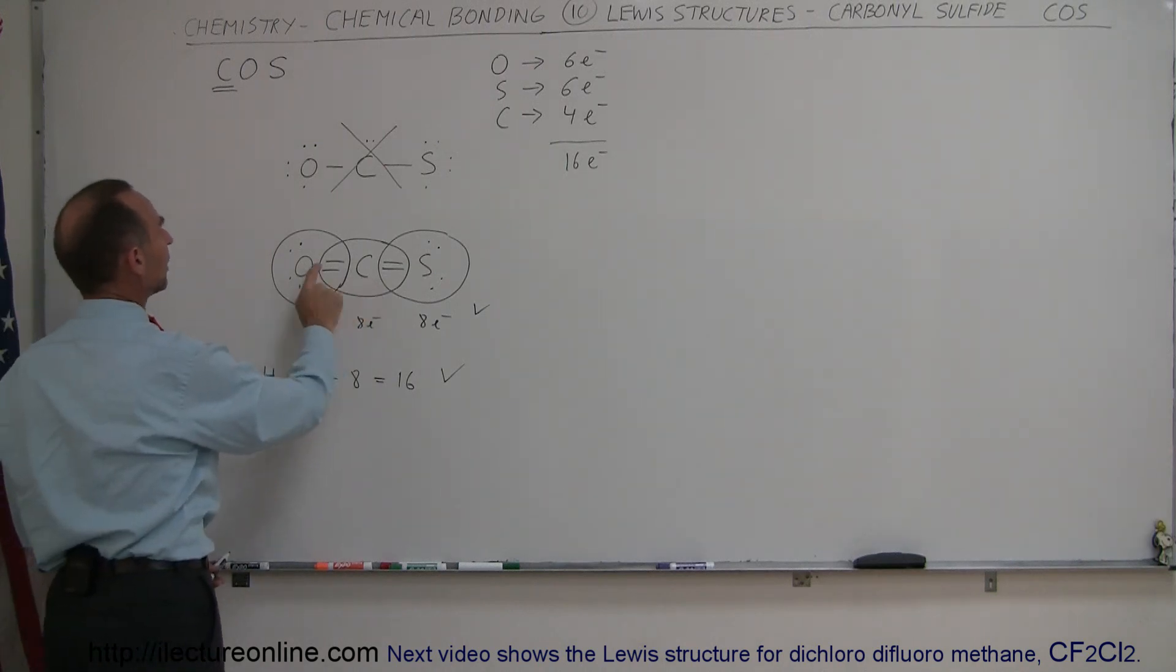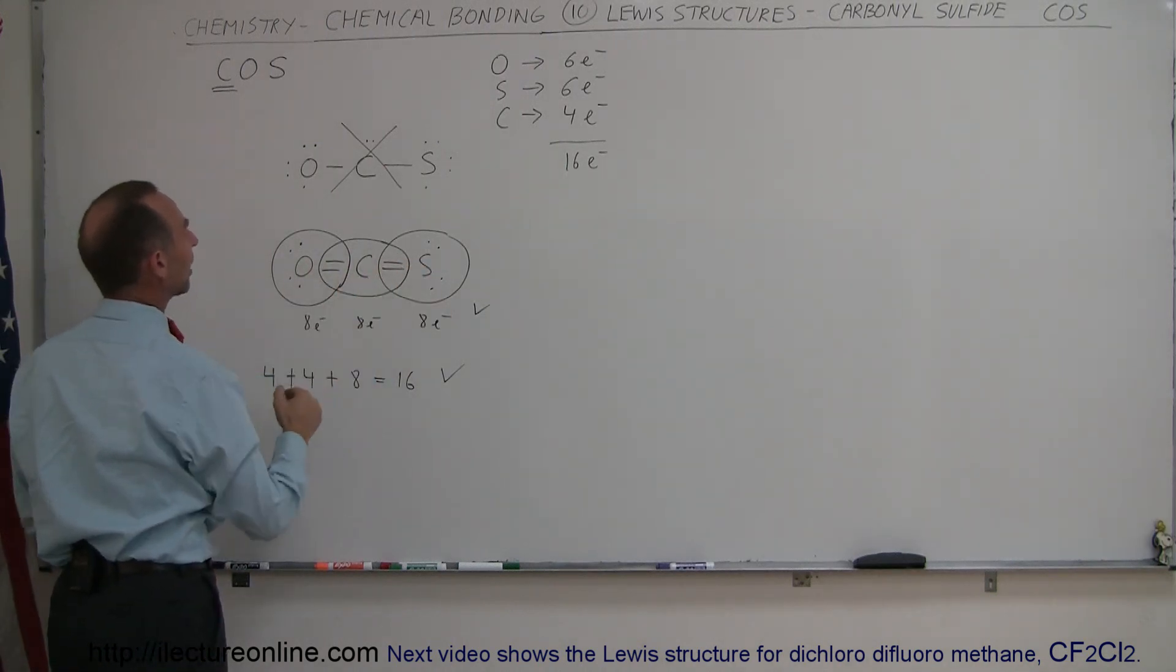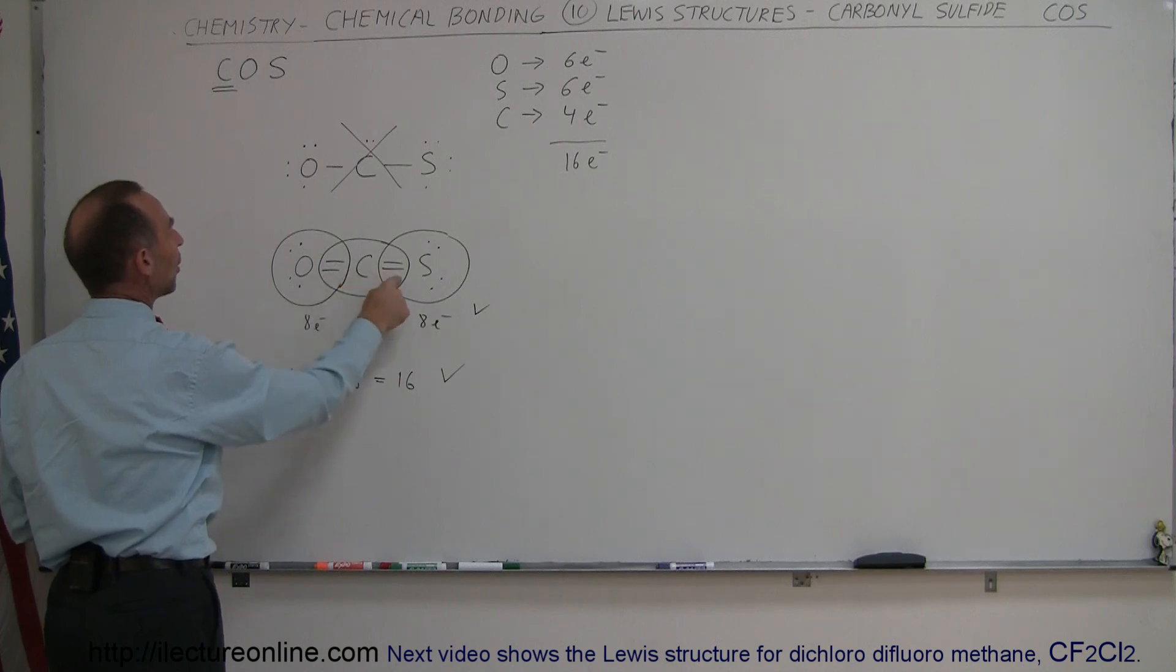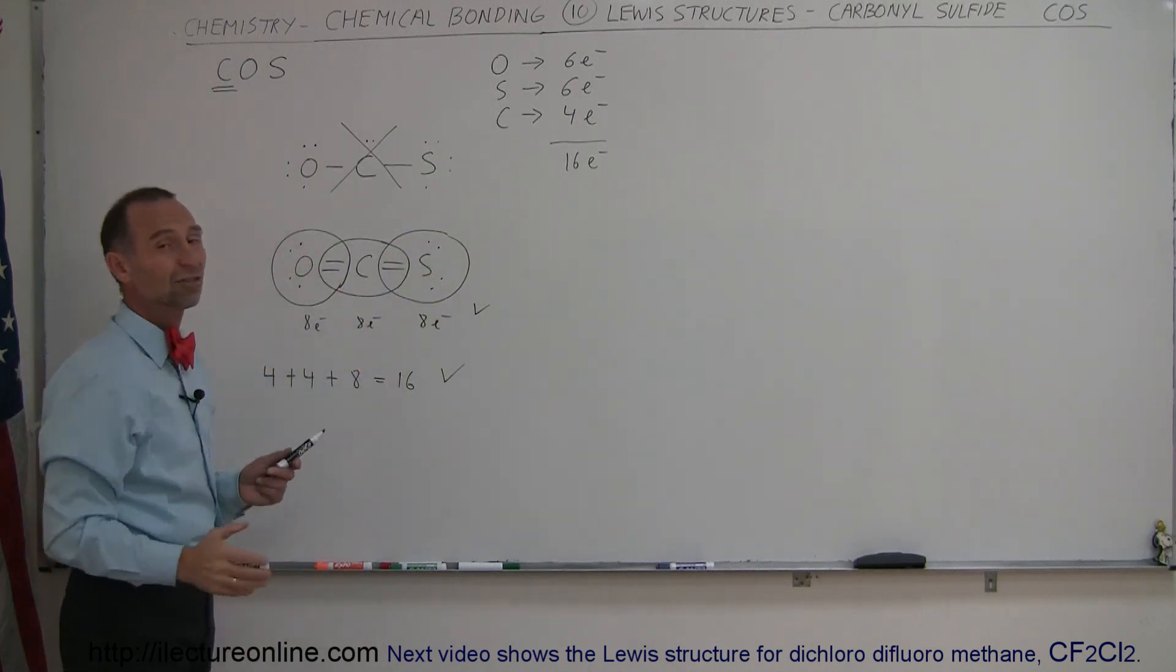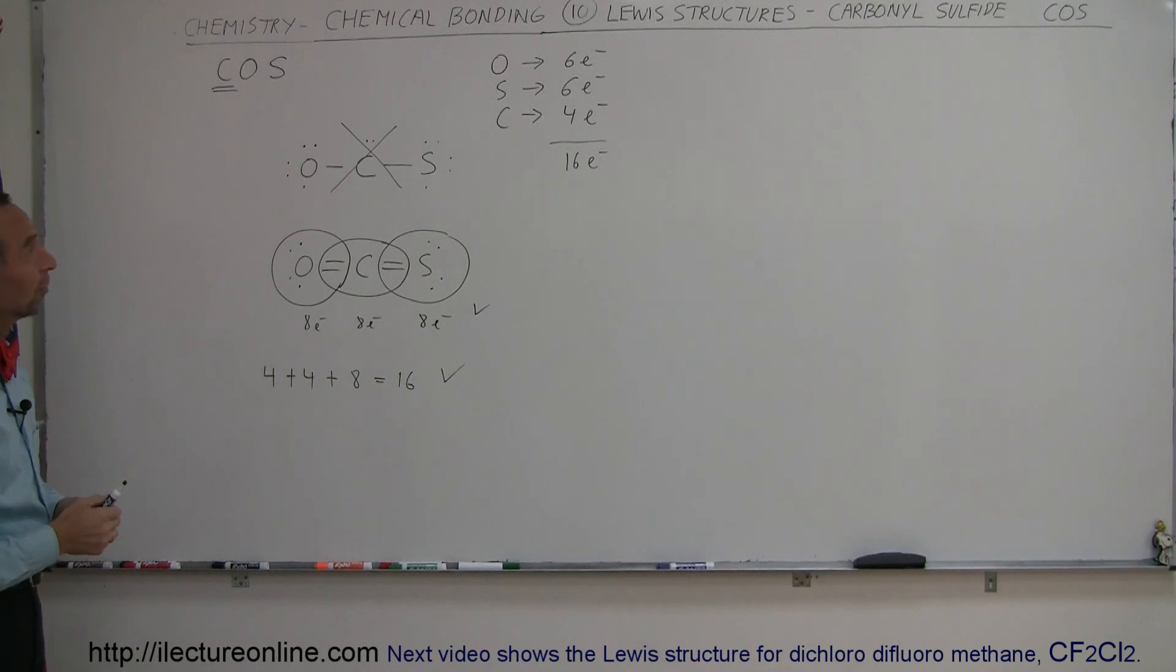We have a carbon in the middle, oxygen and sulfur on either side. It makes a double bond with both, leaving four additional electrons for oxygen and sulfur. There's the Lewis structure for carbonyl sulfide, and that's how you do that.